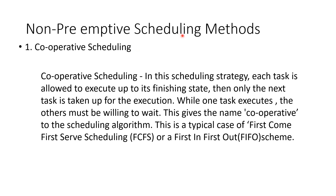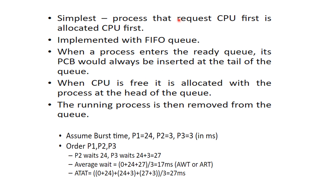One type of non-preemptive scheduling is cooperative scheduling, also called First Come First Served (FCFS) or First In First Out (FIFO). While one task is executing, another must be willing to wait — hence the name cooperative scheduling. A process that requires the CPU first is allocated the CPU first. It is implemented with a FIFO queue: when a process enters the ready queue, its PCB is inserted at the tail of the queue. When the CPU is free, it is allocated to the process at the head of the queue, and that running process is then removed from the queue.